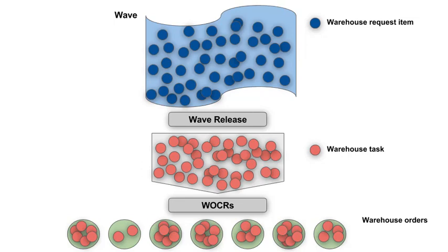Fine, we now know what we have to do in a given time frame. Remember the term wave, and we know what we want to be executed by one resource at a time. Remember the term warehouse order.